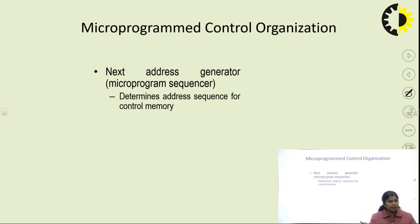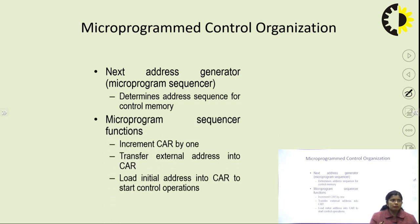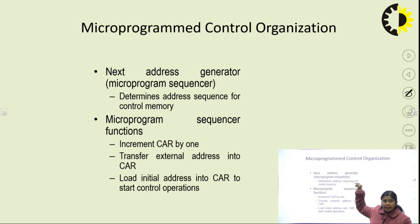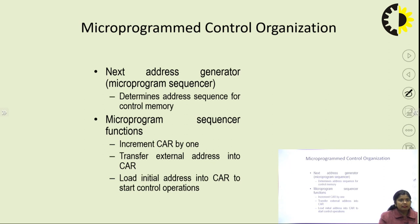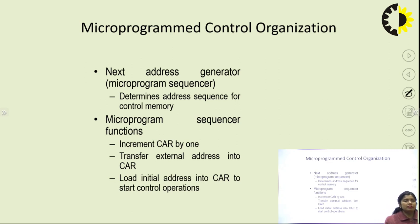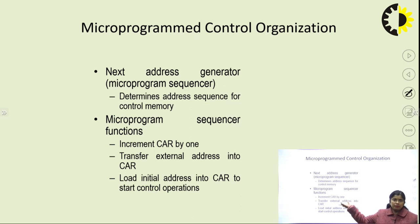The micro-programmed control organization uses address sequencing for the control memory — this determines which particular micro program or micro instruction is going to execute next. The micro program sequencer contains the next address. The sequencer methods include: incrementing CAR by 1, and using external address with mapping techniques, as well as subroutine registers for loading the next instructions.